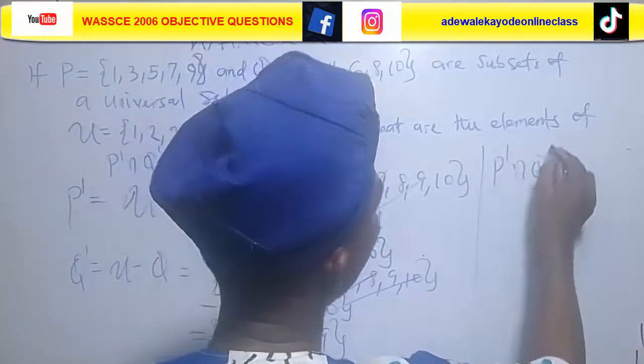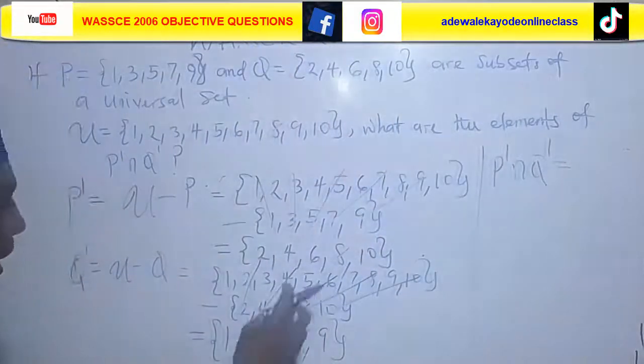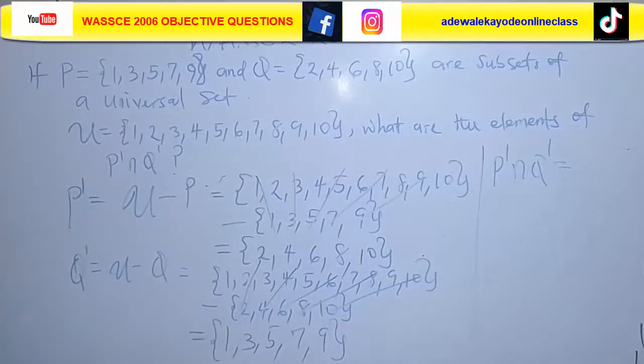Now the question says we are looking for P complement intersect Q complement. That is, in these two sets, what is common to them?